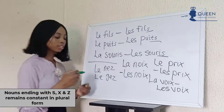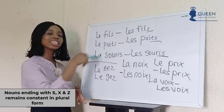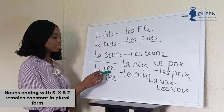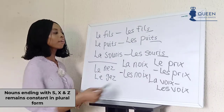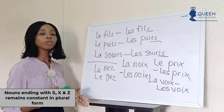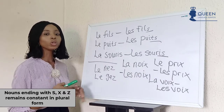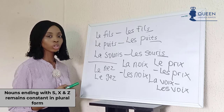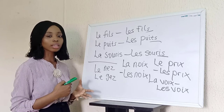So when we have -s ending a word in the singular form, or -z ending a word in the singular form, or -x ending a word in the singular form, the plural form remains the same. We don't change anything in French language. Let's look at another example.